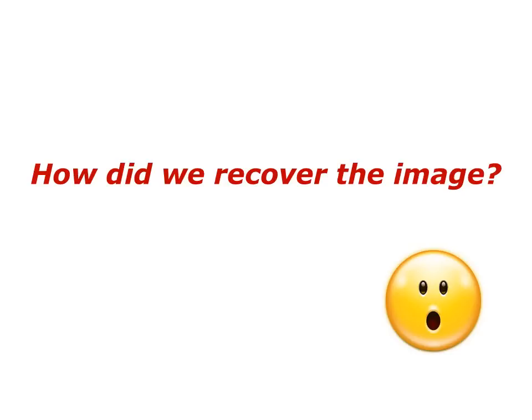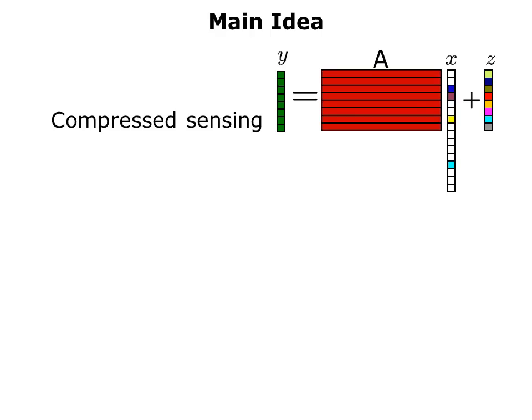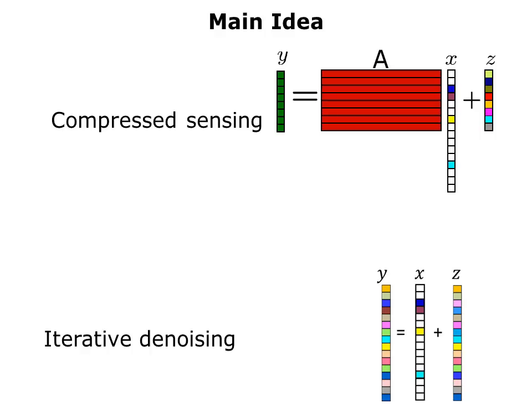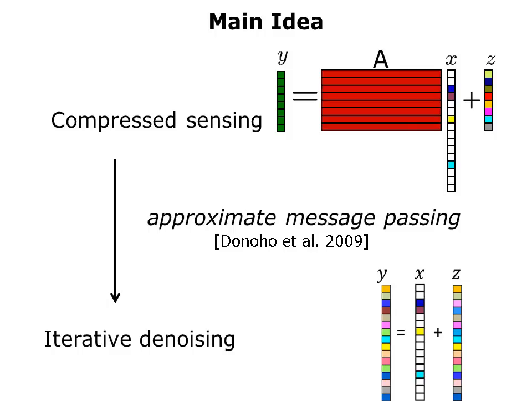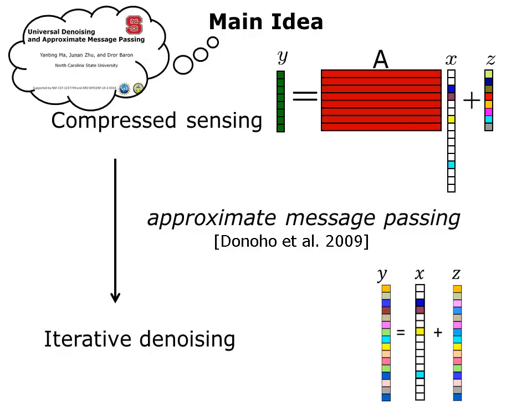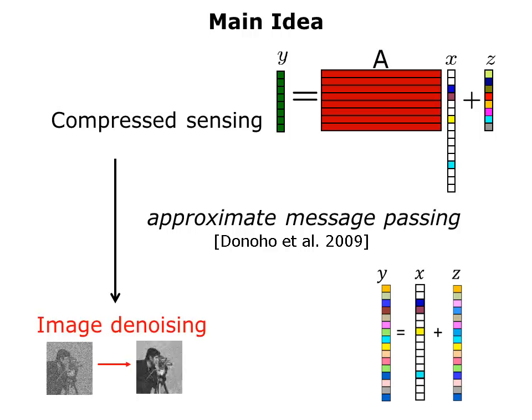So how did we actually recover the image? The main idea is that we have a linear inverse problem, meaning that X was multiplied by A, we added noise, we get noisy measurements Y, and we want to recover X from Y. This is a compressed sensing problem, and we want to translate it to an iterative denoising problem, and we do so using the approximate message passing approach. It turns out that we used a very similar approach in related work — you can check out my video on universal denoising and approximate message passing. The key idea is that by converting from the compressed sensing problem to an iterative denoising problem, the image denoising problem allows us to go from noisy images to cleaner images.